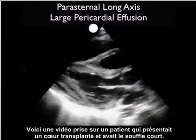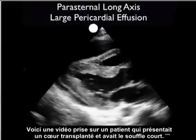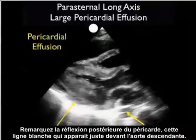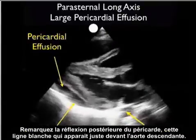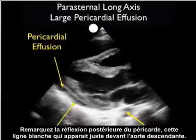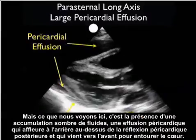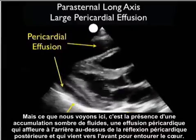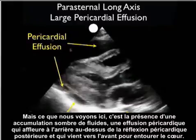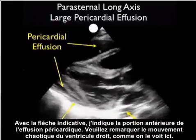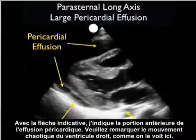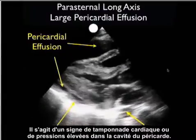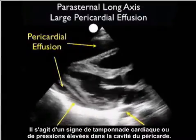Here's a clip taken from a patient who presented with a transplanted heart and acute shortness of breath. We'll begin by identifying the descending aorta at the bottom part of the picture. Note the posterior pericardial reflection — that white line coming off just anterior to the descending aorta. What we see here is the presence of a dark fluid collection, a pericardial effusion that layers out posteriorly above the posterior pericardial reflection and comes anteriorly to surround the heart. With a small indicator arrow, I'll point to the anterior portion of the pericardial effusion and note the chaotic movement of the right ventricle, indicative of early tamponade or high pressures within the pericardial sac.